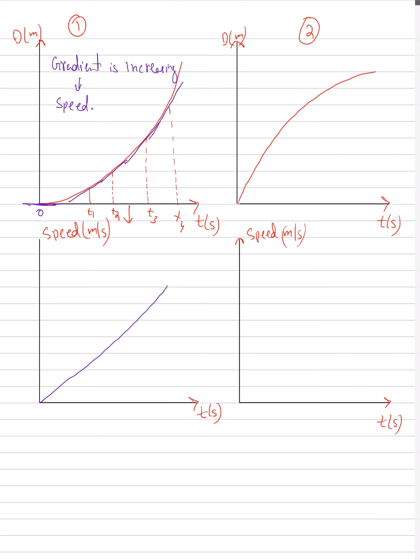So these are my time values. Now let's say that I make a tangent on T1. So if I make a tangent on T1, it will be a steep tangent.